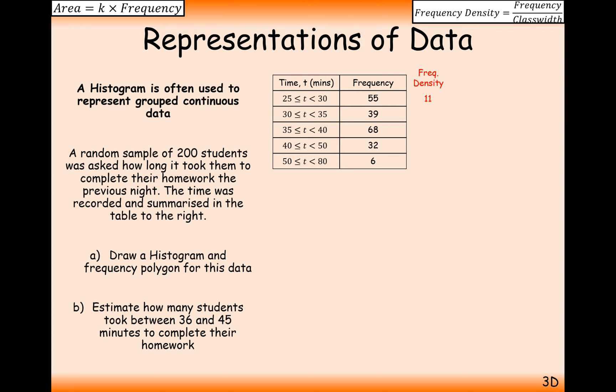So what we're going to do is frequency divided by the class width. So 11. Now effectively what this 11 is representing is the height of the bar. If you're not happy with frequency density, it is a word you'll have to remember, but think height of the bar. So the height of this bar is going to be 11. So therefore 11 times the base on this bar is going to be 5, which will give us an area of 55. So we're going to need to do 39 divided by 5, 68 divided by 5, 32 divided by 10.